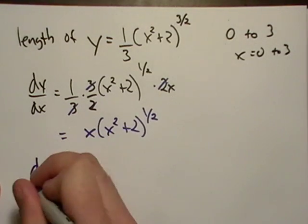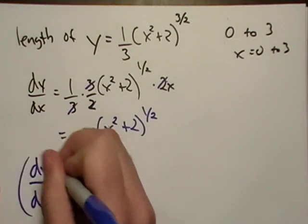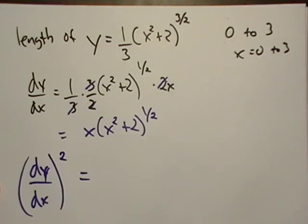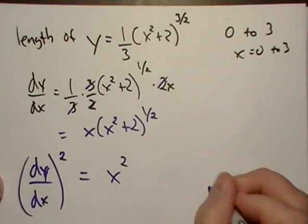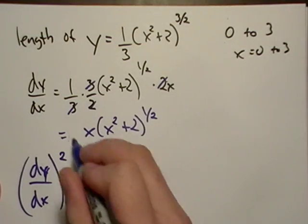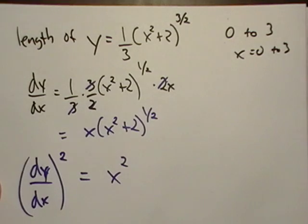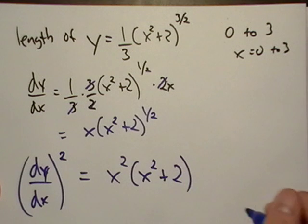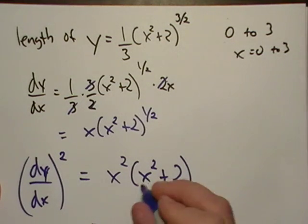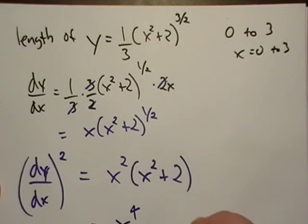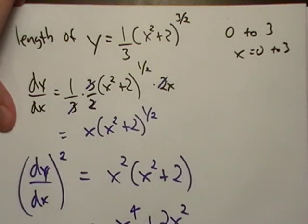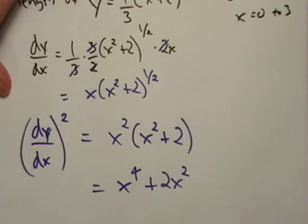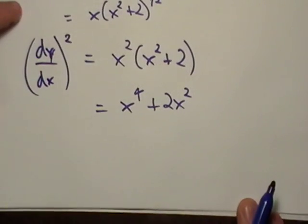Okay. Now we need dy dx squared. So that looks like it's going to be x squared, a square root basically is what we're doing here. So that's just going to be, which equals x to the fourth, two x squared. Okay. All right. So now we got some pieces of information that we're going to end up having to use.